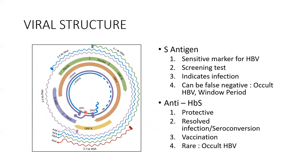Coming to the viral structure — the virus has something called an open reading frame, analogous to genes. We can broadly divide it into four genes: one codes for the surface protein, one for the nuclear material, one for the polymerase — which has enzymes helping in the packaging of the virus — and the core and pre-core region, and the ORFX gene, which is probably responsible for some mutagenesis.